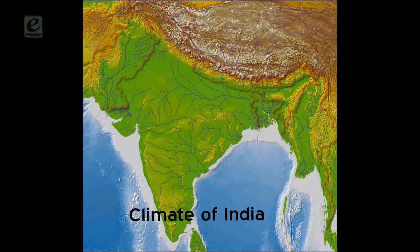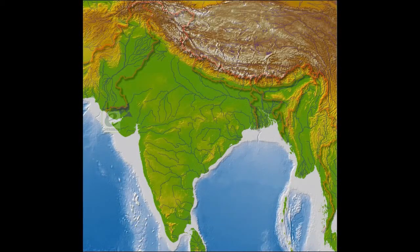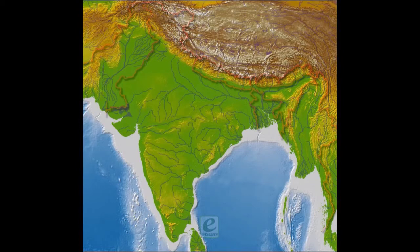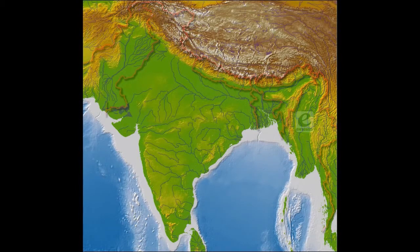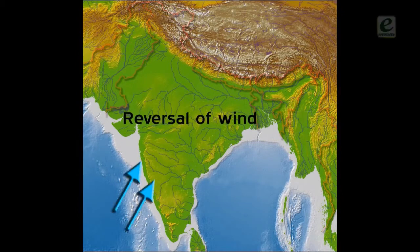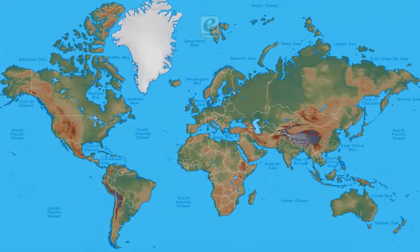The climate of India is described as of monsoon type. Derived from the Arabic word Mosin, monsoon refers to the seasonal reversal in the wind direction through the year. This type of climate is found mainly in South and Southeast Asia.